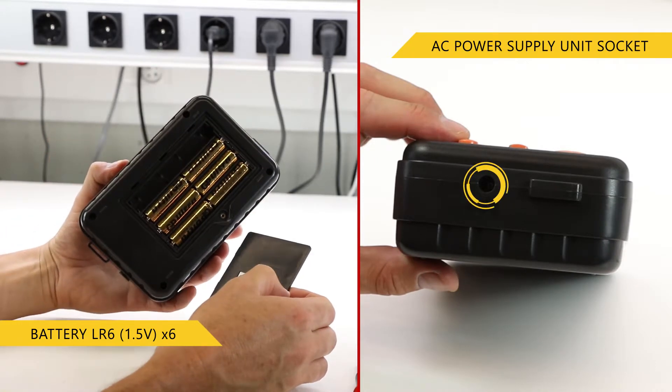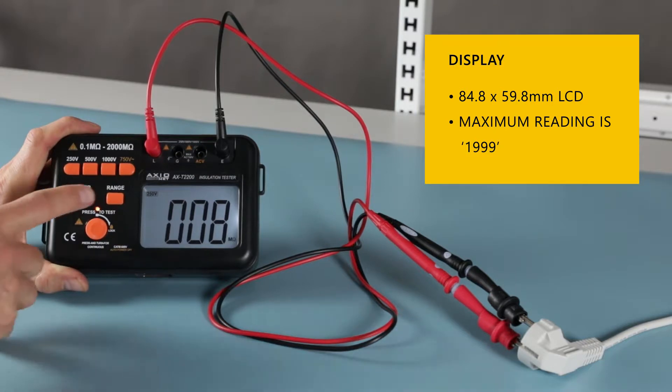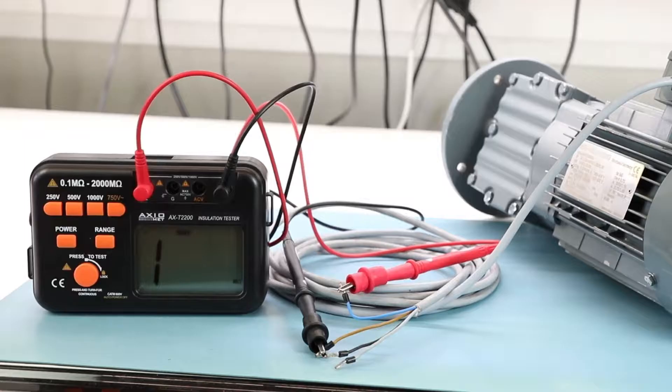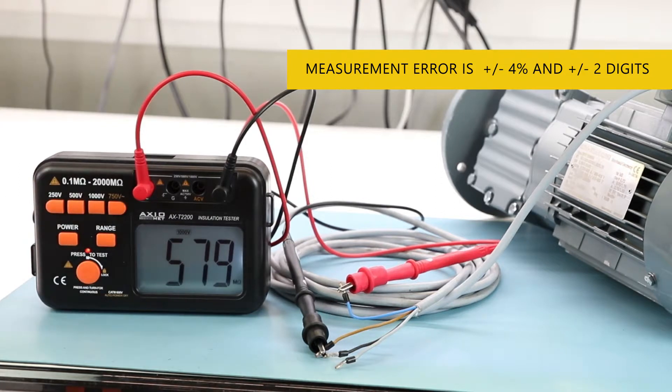The range of electrical resistance measurements is divided into six sub-ranges which allow more accurate results. Measurement error is plus or minus four percent and plus or minus two digits, which is enough for the majority of applications.